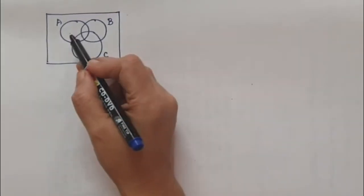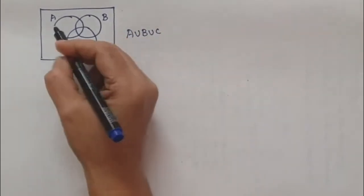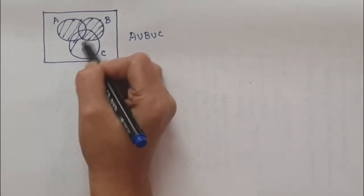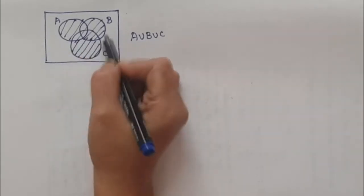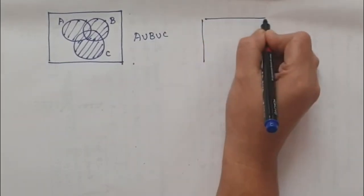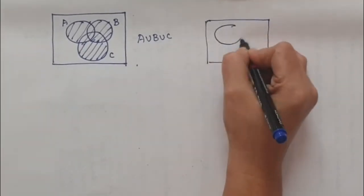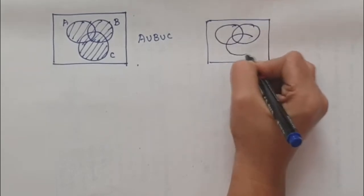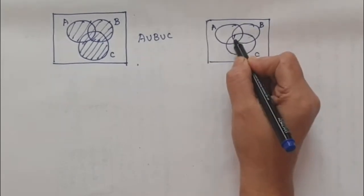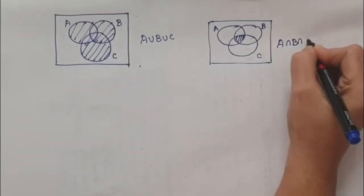Suppose if you have three sets A, B, and C. If you need to shade A union B union C, wherever it is shaded in A, B, and C, you shade it. Wherever there is circle A, circle B, or circle C, we shade — that is called A union B union C. For A intersection B intersection C, the common region for all three sets we need to shade. So we shade this common region — this will be A intersection B intersection C.